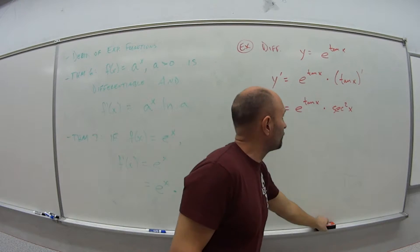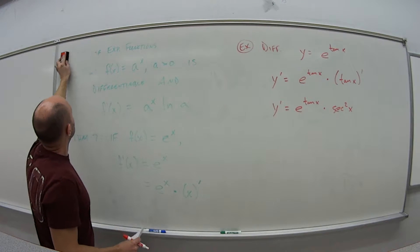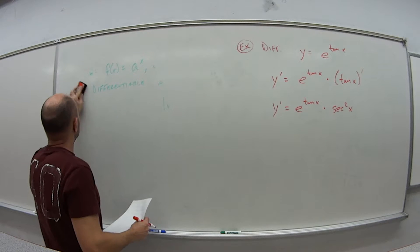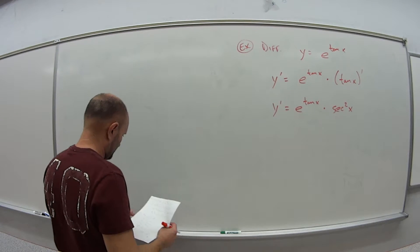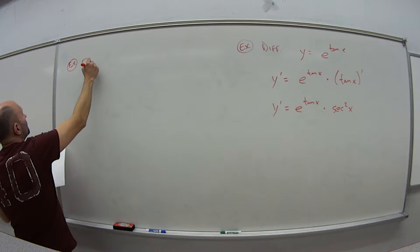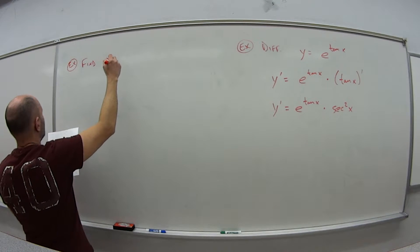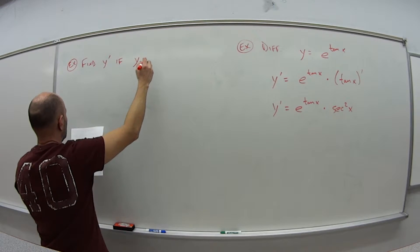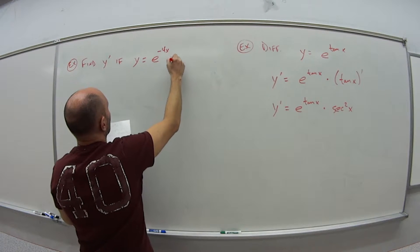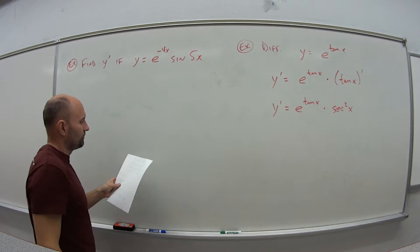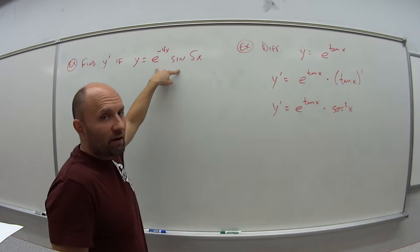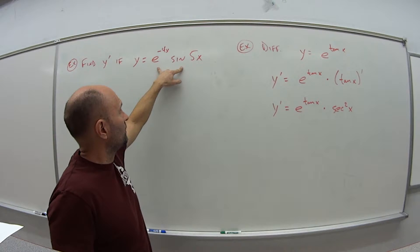That's a pretty straightforward example of how we apply Theorem 7 when we have an exponential function using e. For the second example, we want to find y prime if y equals e to the negative 4x times sine of 5x. We have a product here, so we're going to have to apply the product rule.